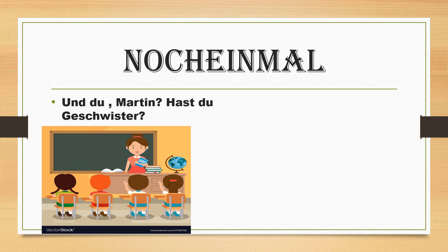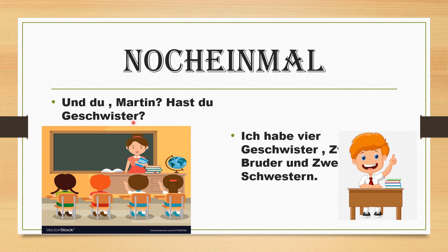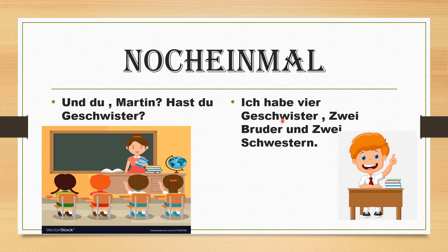Once again — nochmal. Now the teacher is asking Martin: 'Und du, Martin, hast du Geschwister?' — And you, Martin, do you have siblings? Martin answers: 'Ich habe vier Geschwister, zwei Brüder und zwei Schwestern' — I have four siblings, two brothers and two sisters. Once again: Hast du Geschwister? Ich habe vier Geschwister, zwei Brüder und zwei Schwestern.